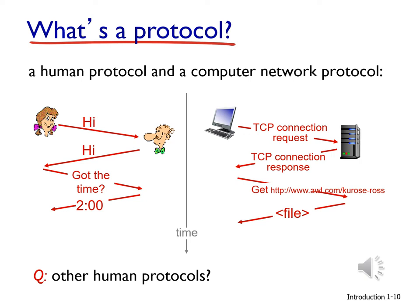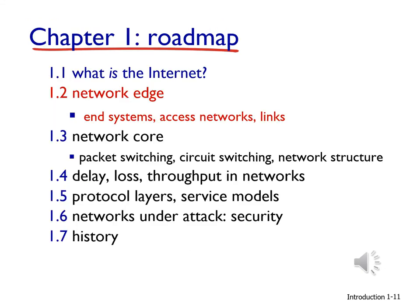In your free time, look at other human protocols and network protocols beyond TCP. Try to remember at minimum: IP (Internet Protocol), HTTP (Hypertext Transfer Protocol), and FTP (File Transfer Protocol). These are prominent protocols you will encounter throughout the course. Get used to the abbreviations, what they stand for, and what each protocol does, even at a basic level. Moving on to section 1.2, we will discuss the network edge, end systems, access networks, and the links that comprise a network.